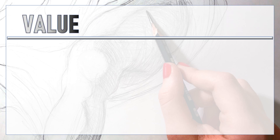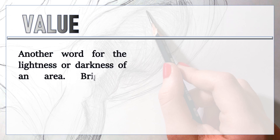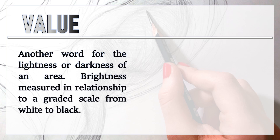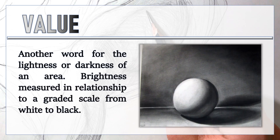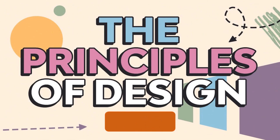The last element is value — another word for the lightness or darkness of an area, with brightness measured in relationship to a graded scale from white to black. We will now proceed to the principles of design. Good design is possible without understanding the principles of design, but it may take a lot of trial and error to create something that both looks good and creates an optimal user experience.